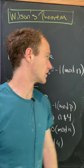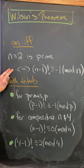The first is an if and only if statement. So n bigger than or equal to 2 is prime if and only if n minus 1 factorial is congruent to minus 1 mod n.